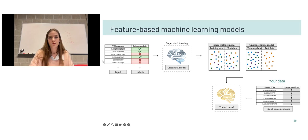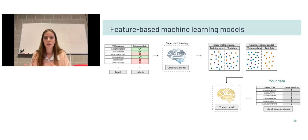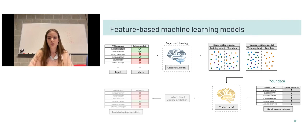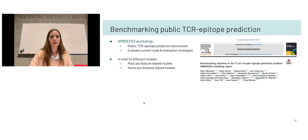Once your model is trained and has learned which patterns dictate epitope specificity, you can input your own data — for example a list of TCR sequences from a large sequencing experiment — and ask which of these sequences are predicted to be specific for epitope X. The model will output a result indicating that only this sequence has the correct pattern and features to recognize epitope X. That is essentially how these models work: they train, look for features and patterns dictating epitope specificity, and give you output for your unseen TCRs.